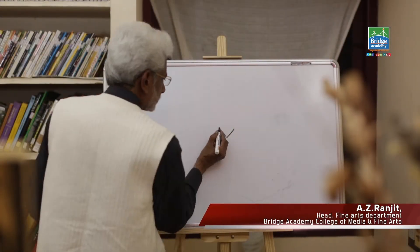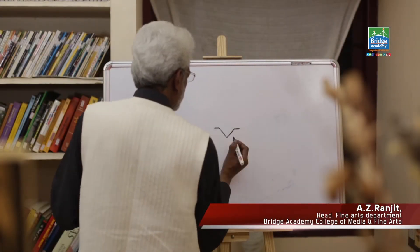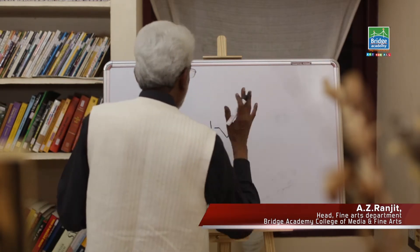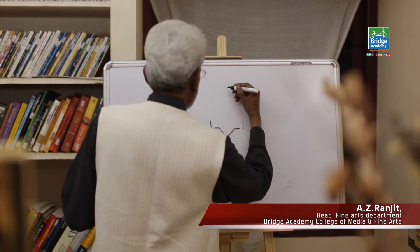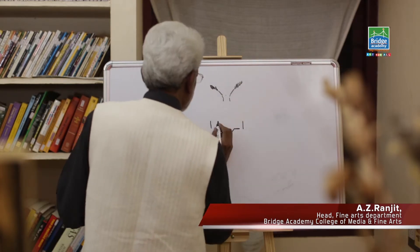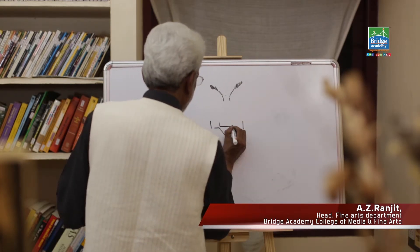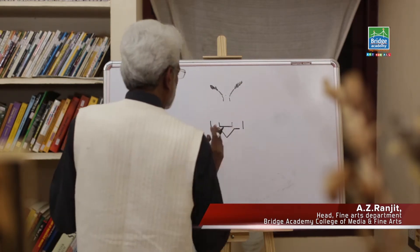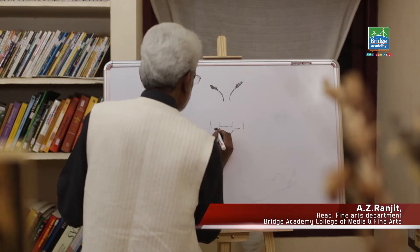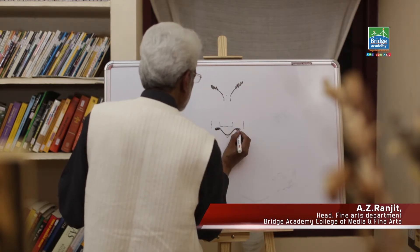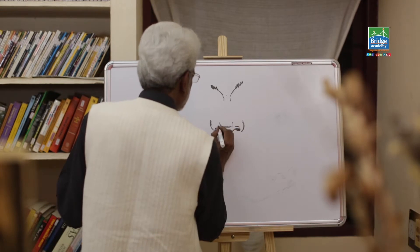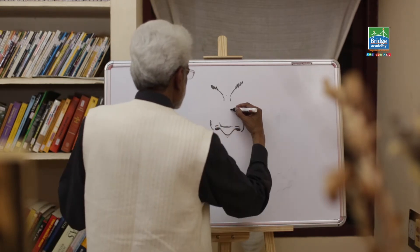Now drawing the nose — we draw a V, then draw two small horizontal lines and two verticals to show the nostril. Then we draw an open box, curve out the lines, and add a little bit of detail.